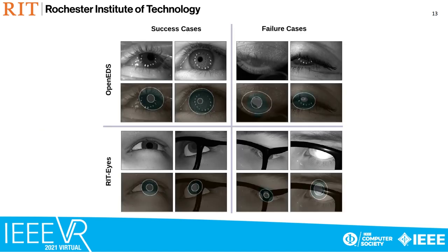Here are some example outputs from LSEC. Note that the ground truth ellipses are marked as a solid white outline.